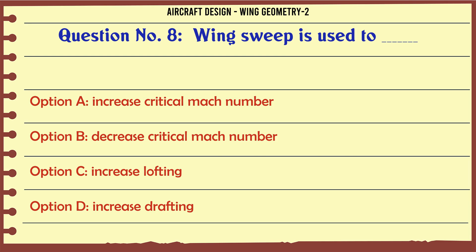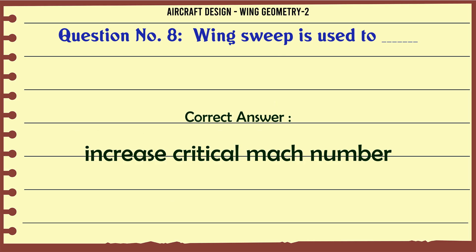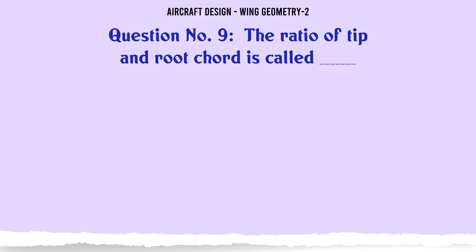The ratio of tip and root chord is called: A: Taper ratio, B: Sweep, C: Aspect ratio, D: Slope. The correct answer is taper ratio.